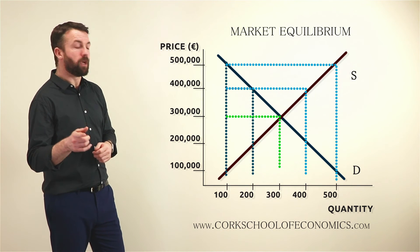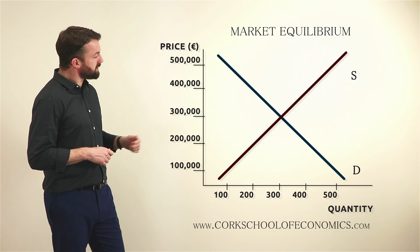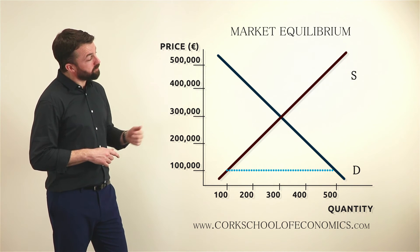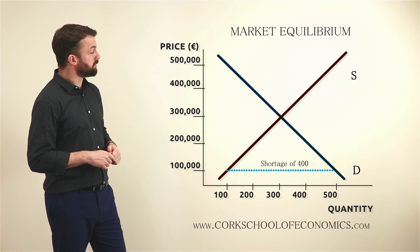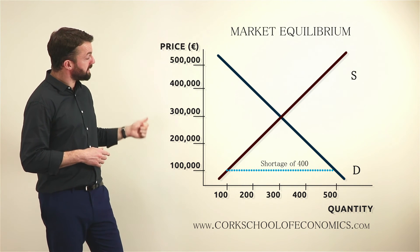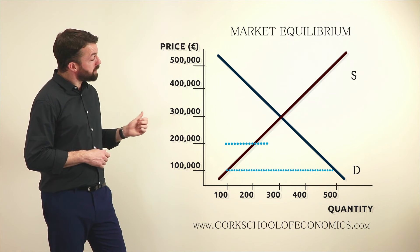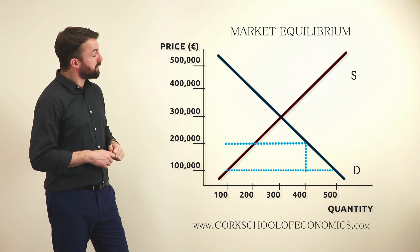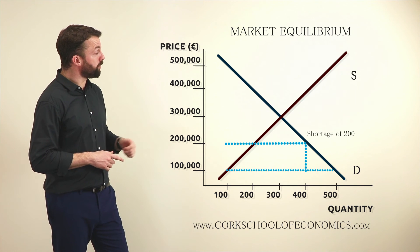Take the other extreme — go down to a low price, take €100,000. At that price there will be 100 houses supplied and there will be 500 houses demanded. Therefore there is a shortage of 400 houses — an excess demand — so the price will have to go up. It goes up to €200,000. At €200,000 there are 200 houses supplied and 200 houses demanded, but there is still an excess demand or shortage of 200 houses.